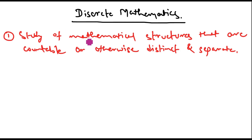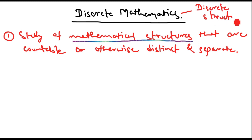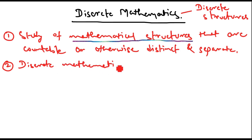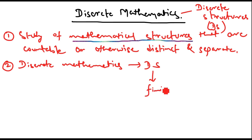Because of the term 'mathematical structures,' discrete mathematics is sometimes also called discrete structures. Some universities offer courses under the name discrete structures. Discrete structures can be finite or infinite — both can be discrete structures.